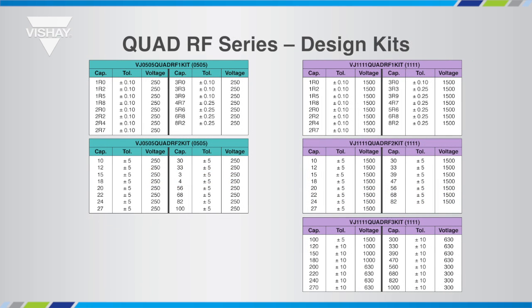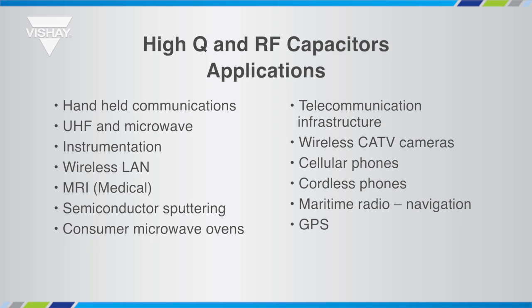High Q and RF capacitors can be found in almost any product, ranging from consumer products like cellular phones, GPS equipment, and wireless devices, up to highly demanding MRI medical equipment, RF instrumentation, and telecommunication infrastructure.